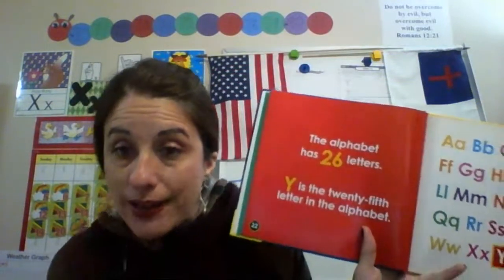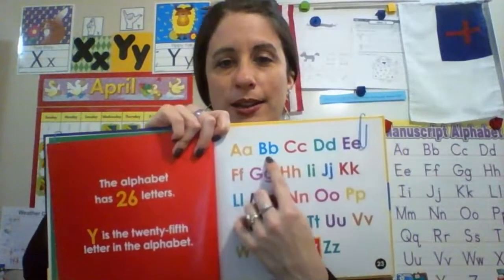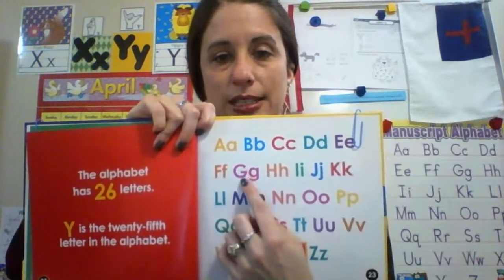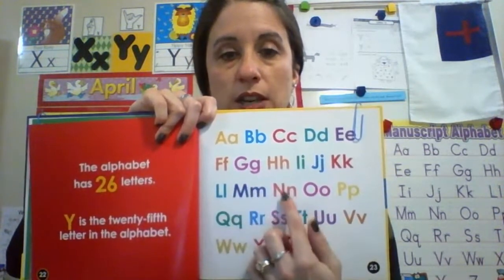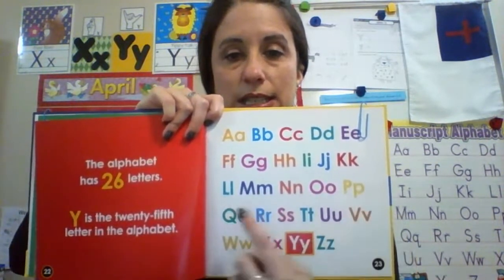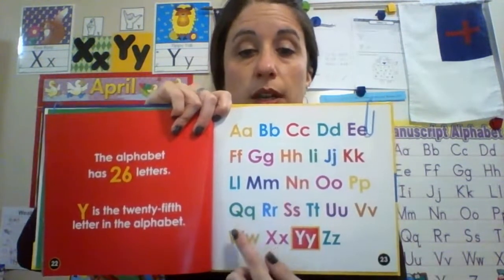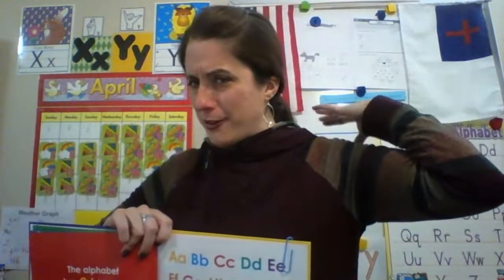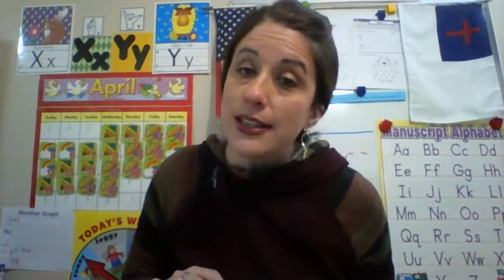The alphabet has 26 letters — you guys know that! Y is the 25th letter. We're almost done with the alphabet! Let's count and see: one, two, three, four, five, six, seven, eight, nine, ten, eleven, twelve, thirteen, fourteen, fifteen, sixteen, seventeen, eighteen, nineteen, twenty, twenty-one, twenty-two, twenty-three, twenty-four, twenty-five. Pat yourself on the back if you counted with me — good job!